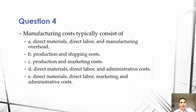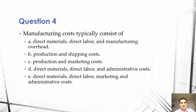So it reads: manufacturing costs typically consist of either A, direct materials, direct labor, and manufacturing overhead; B, production and shipping costs; C, production and marketing costs; D, direct materials, direct labor, and administrative costs; or E, direct materials, direct labor, marketing, and administrative costs.